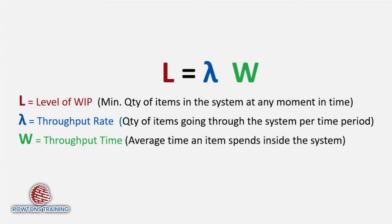The formula L equals lambda W stands for L, the level of work in progress, the quantity of inventory, multiplied by lambda, which is the throughput rate, the quantity of stuff we are making per time period, multiplied by W, the throughput time.